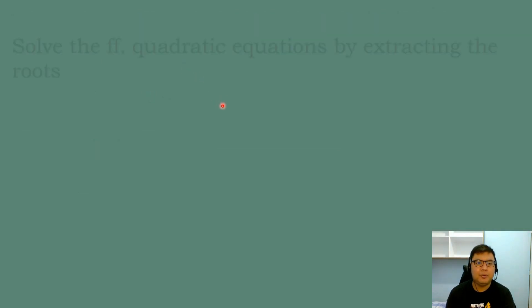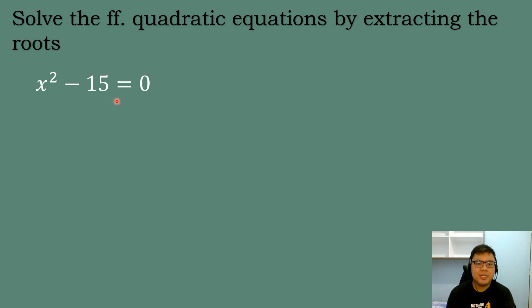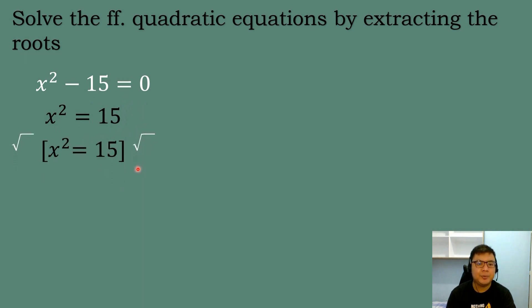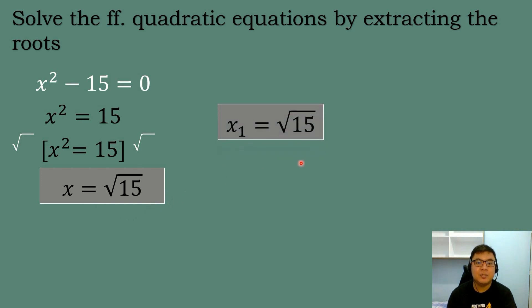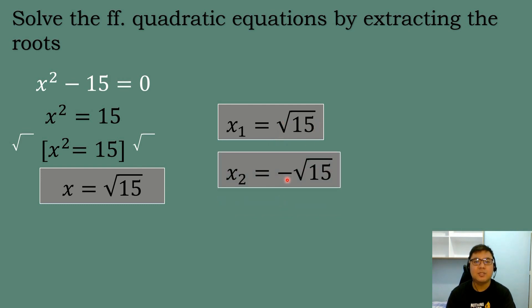Next: Solve x squared minus 15 equals 0. Transpose negative 15 to get x squared equals 15. Multiply both sides by square root — squared and square root cancel, leaving x equals square root of 15. Since 15 is not a perfect square, and square root of 15 cannot be simplified further, it is already in simplest form. So the two possible roots are positive square root of 15 and negative square root of 15.